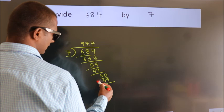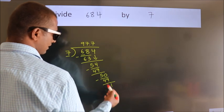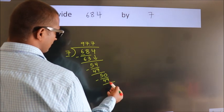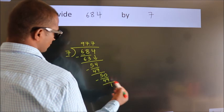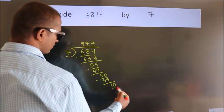Now we subtract and get 1. After this, we already have the decimal, so directly take 0.